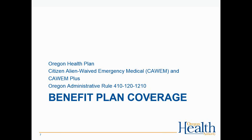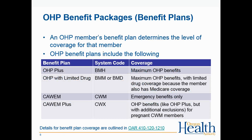Benefit plan coverage is found in OAR 410-120-1210. These are OHP benefit packages — the term varies between the MMIS provider web portal and the Oregon Administrative Rules. An OHP member's benefit plan determines their level of coverage. Benefit plans include OHP Plus (system code BMH), OHP with limited drug (BMM or BMD), and CAWEM and CAWEM Plus.